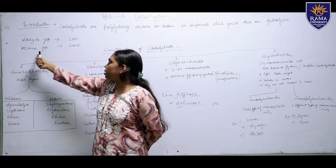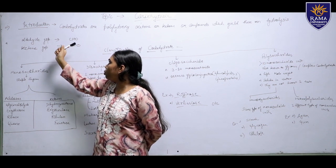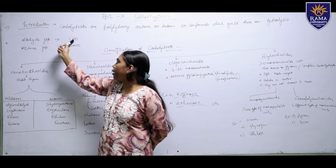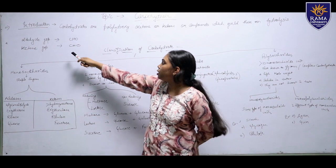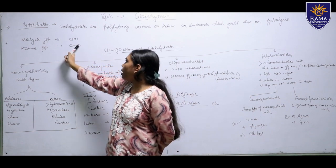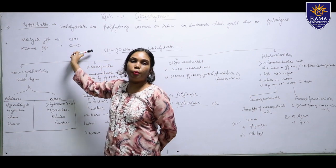Here is the aldehyde group and here is the ketone group. The aldehyde group has a CHO group, and the ketone group has a C double bond O group.